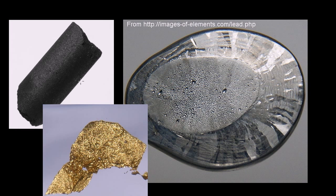Here are pictures of some of these substances. This right here is carbon, in its graphite form. This right here is lead. This right here is gold. All of the ones I've shown pictures of here are in their solid form.